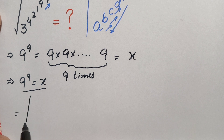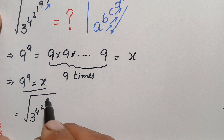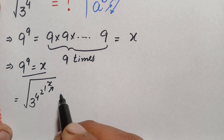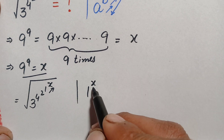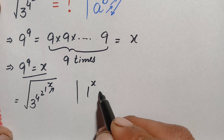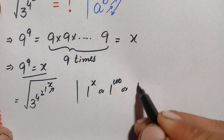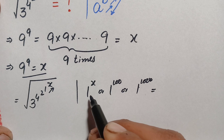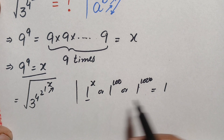The number now becomes the whole square root of 3 raised to the power 4, raised to the power 2, raised to the power 1, raised to the power x. We now find the value of 1 raised to the power x. Remember that 1 raised to any power — whether x equals 100, 1000, a million, or a billion — is always equal to 1. So we replace 1 raised to the power x with 1.